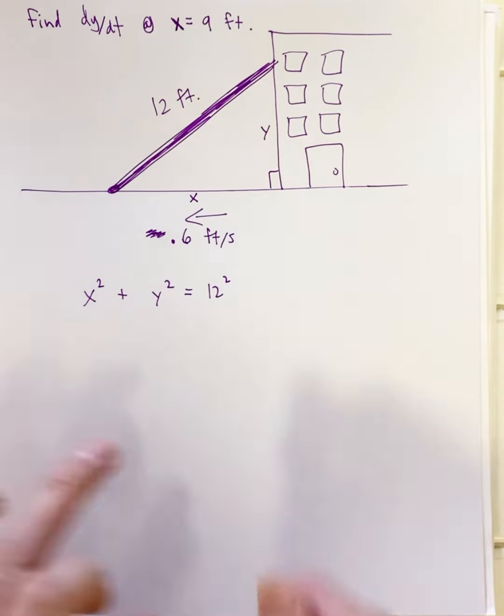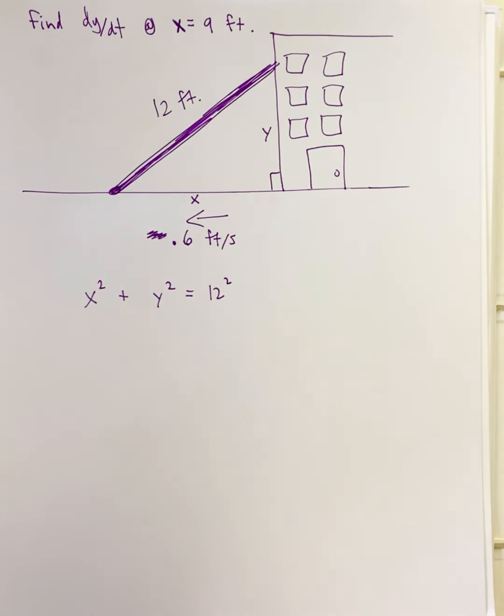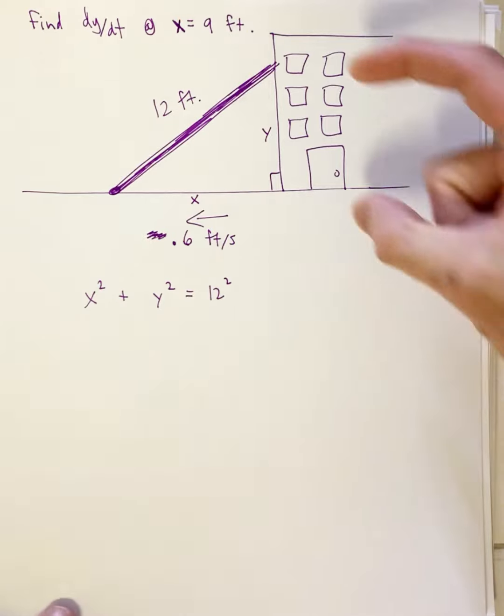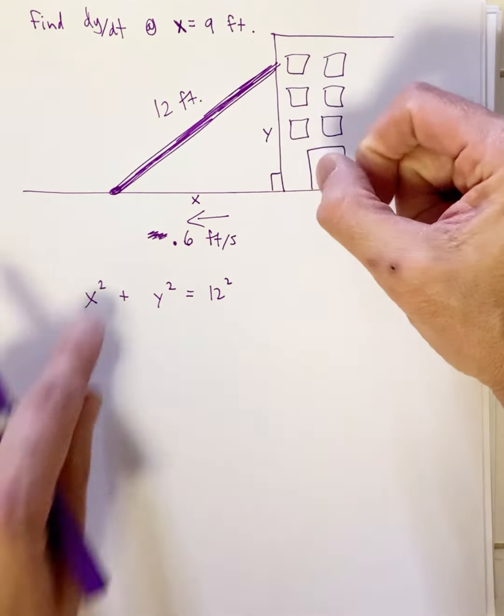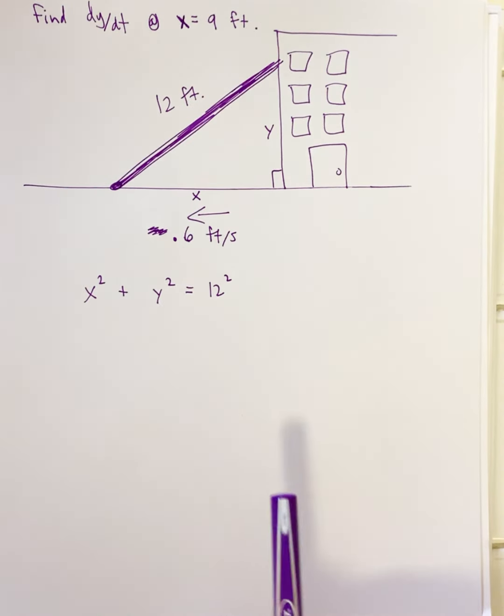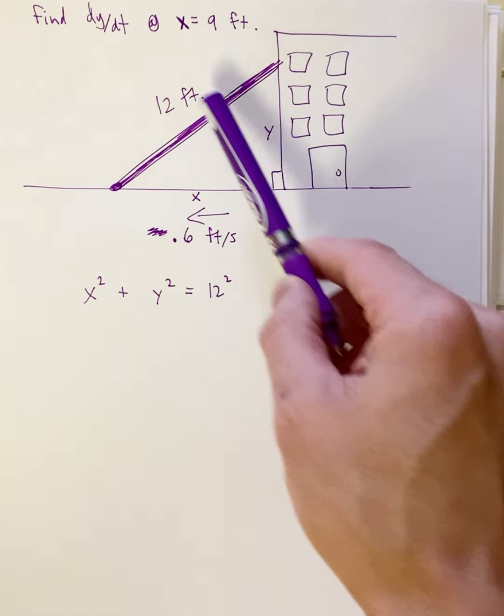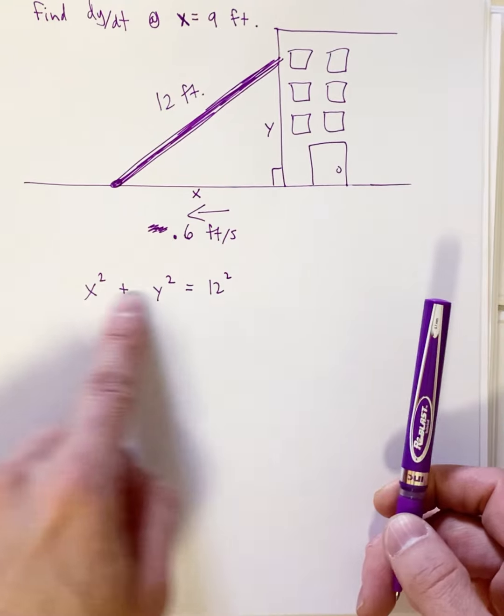This is increasing at this velocity. The goal is to find dy/dt, which is this here and how fast this is shrinking as this gets pulled away. We need an equation that relates x, y, and 12, so I already wrote it down.